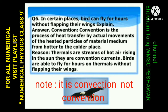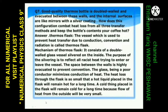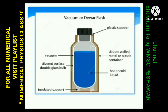Question 7: A good quality thermos bottle is double-walled and evacuated between these walls, and the internal surfaces have a silver coating. How does this configuration combat heat loss from all three transfer methods and keep the contents hot or cold? Thermos ہمیں کس طریقے سے ٹھنڈی چیزوں کو ٹھنڈا اور گرم کو گرم رکھتا ہے؟ تین methods of heat transfer ہیں اور تینوں کو یہاں روکا گیا ہے۔ اس کے inside کے glass کو silver color کیا جاتا ہے کیونکہ silver color good reflector of heat and light ہے، تو radiation اس flask سے باہر نہیں جا سکتی کیونکہ وہ reflect ہو کے دوبارہ inside چلی جاتی ہے۔